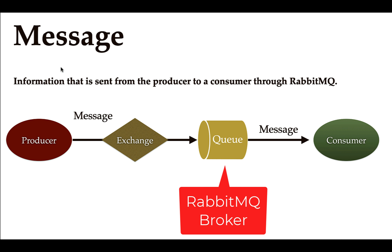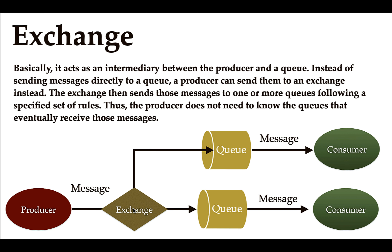A message is information sent from the producer to the consumer through the RabbitMQ broker. A message can be of any type — String, JSON, byte array, plain text, or HTML. Exchange acts as an intermediary between producer and queue. Instead of sending a message directly to the queue, a producer sends it to the exchange, which routes it to the respective queues.